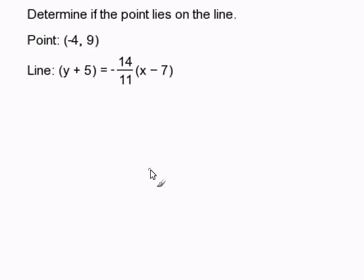Determining if a point lies on the line given an equation in point slope form. In order to do this, all we have to do is substitute in our x and y value of our ordered pair into our equation. We must identify our x value and our y value. Our x value is the first number of the ordered pair and the y value is the second number.